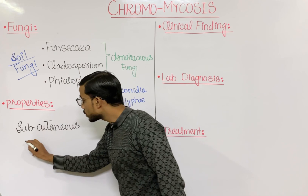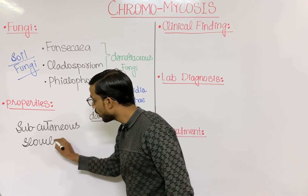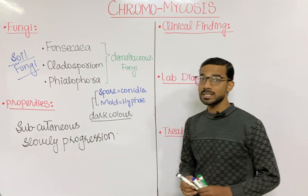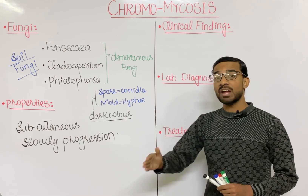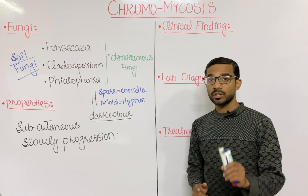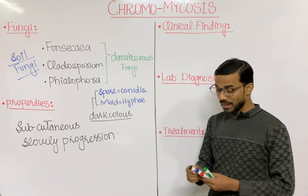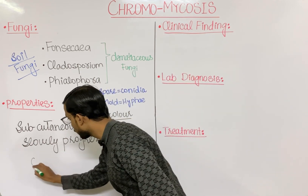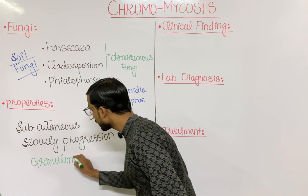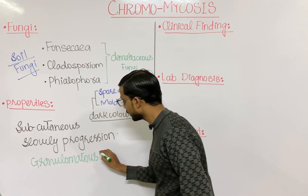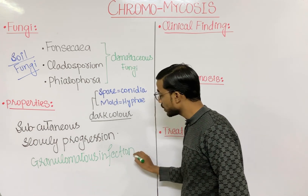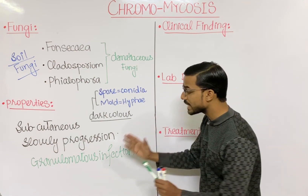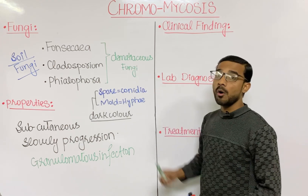Chromomycosis shows slow progression — it develops gradually over time and you will never see a sudden onset. In this disease you will see a granulomatous infection, in which the immune system is activated to destroy the fungi.